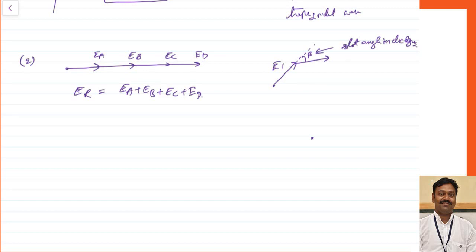Again the third conductor should pass like this, and it will be displaced by some angle beta. So this is my EMF E2, this is my EMF E3. Similarly, the fourth EMF will be E4, and again this angle will be beta. With respect to this, let us assume this is my radius.